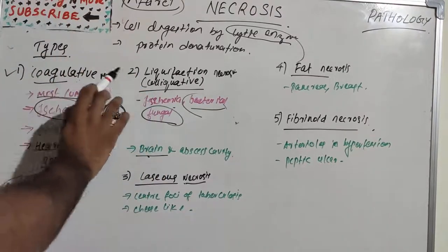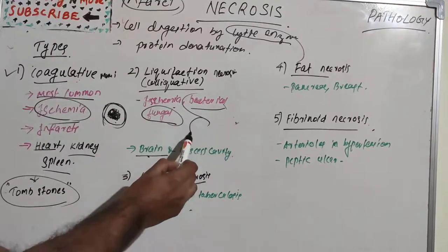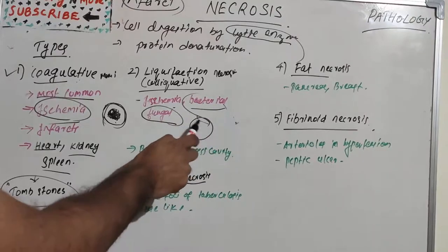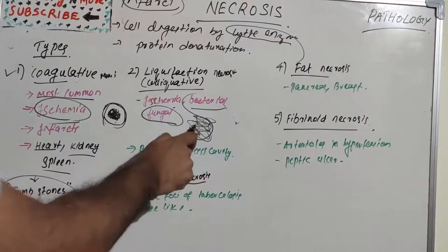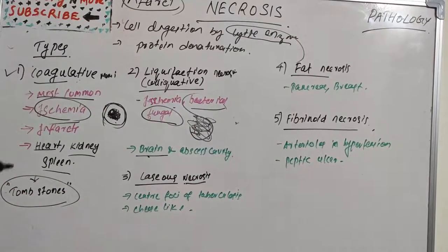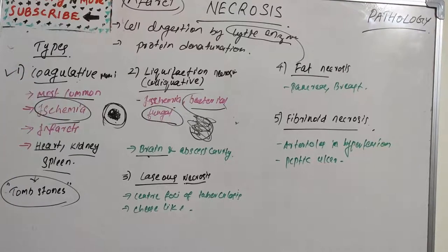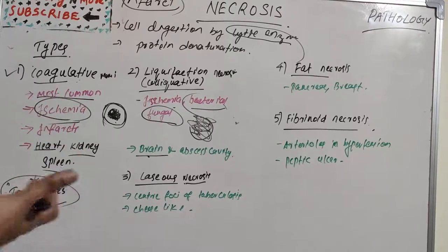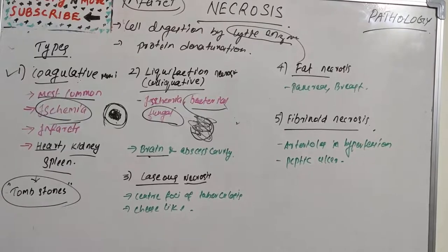The structure becomes completely disorganized and turns into a liquid viscous mass — that is the key difference from coagulative necrosis. If the process was initiated by acute inflammation, the material is frequently creamy yellow with pus formation. The affected area is soft and liquefied with lots of necrotic debris, and later a cyst wall is formed. Microscopically, the cystic space contains necrotic cell debris, macrophages, and phagocytic material.